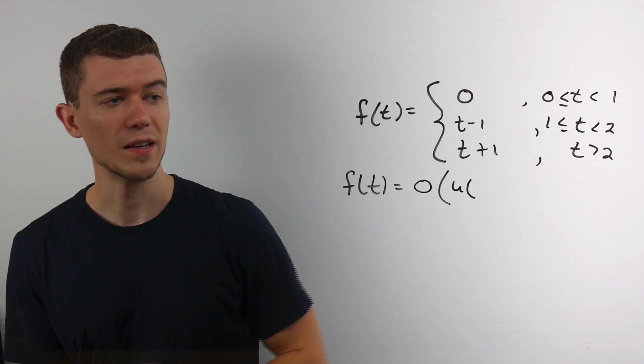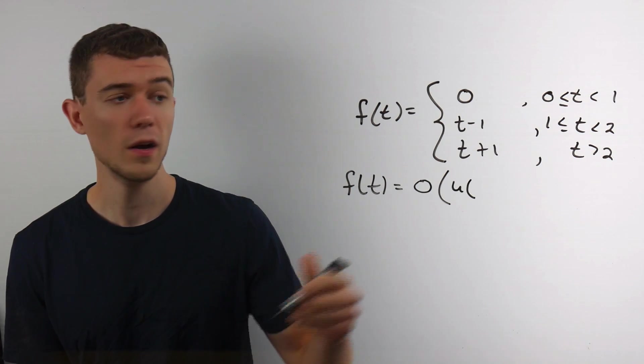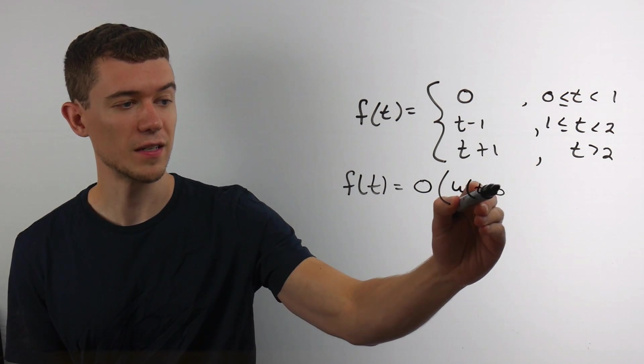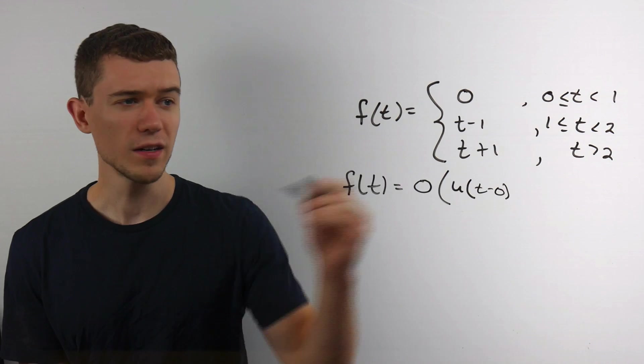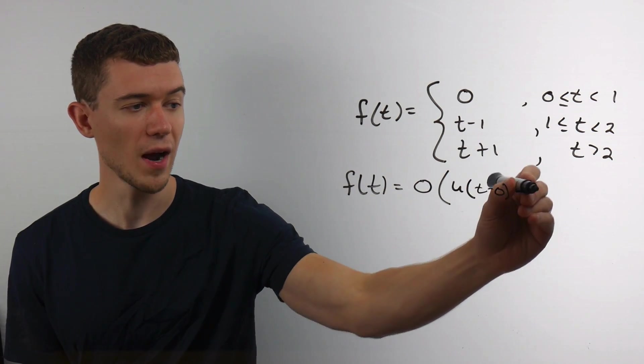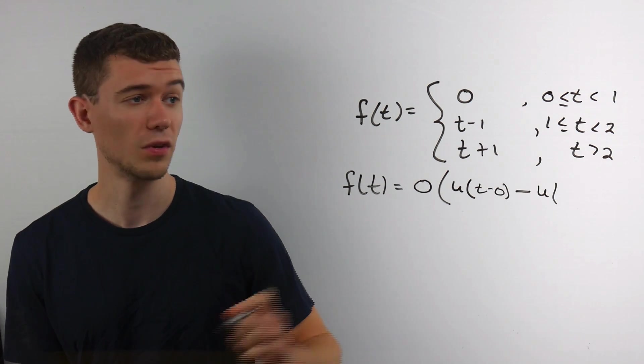So where does this first piece, this 0, turn on, flip on? Well, it flips on when t starts at 0, so I would insert a t minus 0. Where does this 0 stop? In other words, I subtract the unit step function for where it flips off. Well, this first piece flips off at t minus 1.